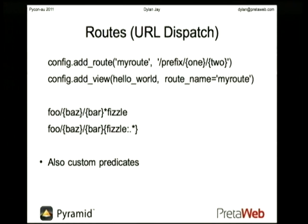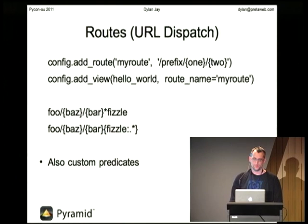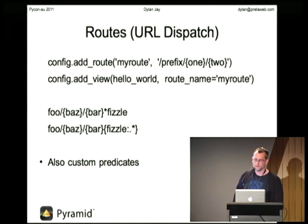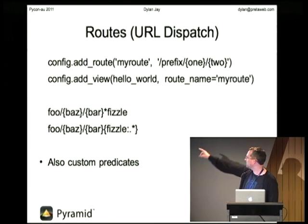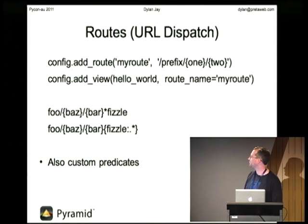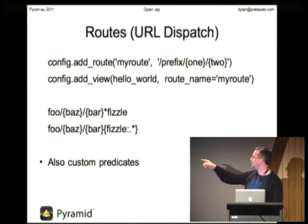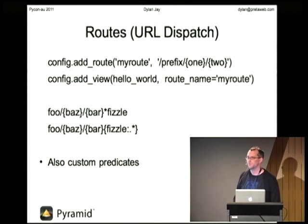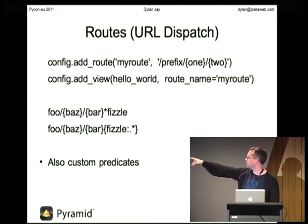Most people are familiar with the idea of routing — they call it URL dispatch. It's a pretty familiar concept for anyone who's looked at Rails or Django. Here is the syntax for how you do it. You've got this kind of one/two thing which become variables in a dictionary passed into the request that you can get later. It's a two-step process: you add the route and give it a name, and the second part is you add the view and tell it which route to use to match that particular view.